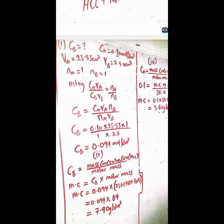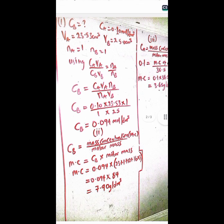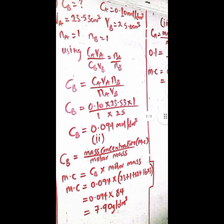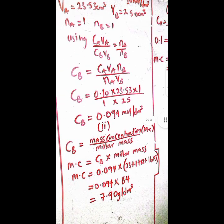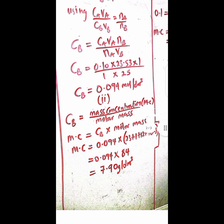So using this formula, CA times VA over CB times VB equals NA over NB. You have to make CB the subject of the formula since you are looking for the concentration of the base in mole per dm cubed. So substituting other values as it is here, we got 0.094.